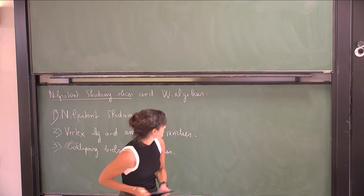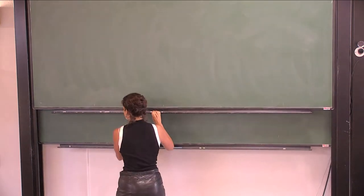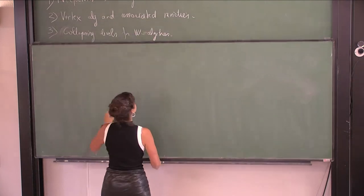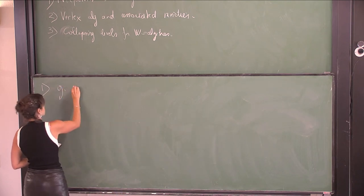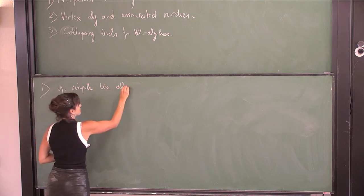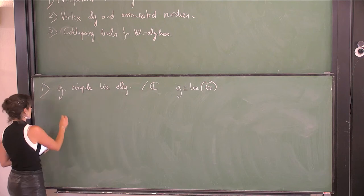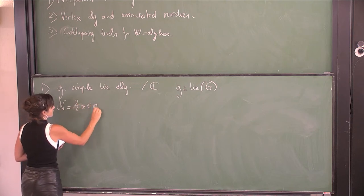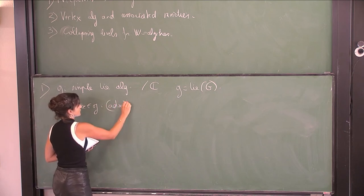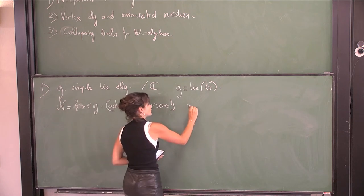For the first part, let me introduce some notations. In my talk, G will be a simple Lie algebra, and the ground field will always be C. G is the Lie algebra of some algebraic group G. G acts on its Lie algebra and its dual. I denote by N the set of nilpotent elements of G, which are the elements X such that ad(X)^n = 0 for some big N.